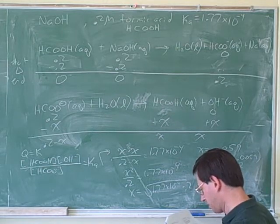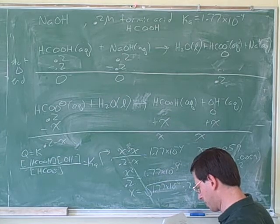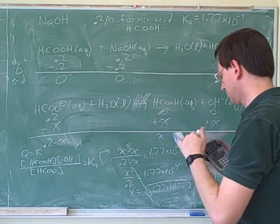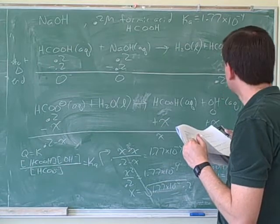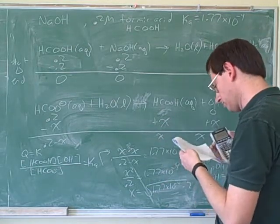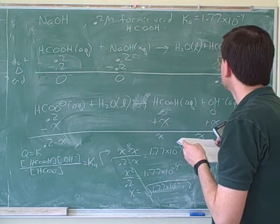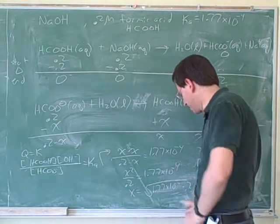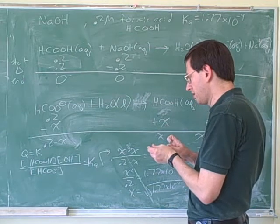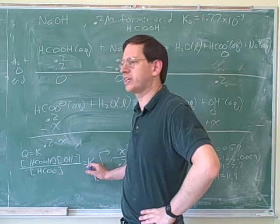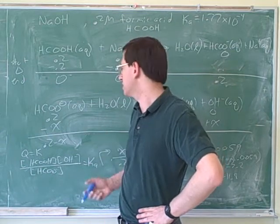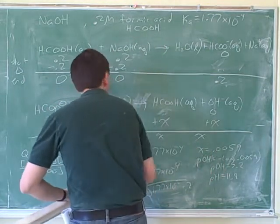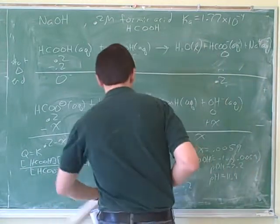What is the pH of a 0.2 molar formic acid solution? Here we used the Ka. But the Ka is the equilibrium constant for an acid reaction. This is a base reaction, so you have to calculate it using Kw equals Ka times Kb. That's right. Good problem here. So all our work is wrong — well, most of the work over here. Let's try again.